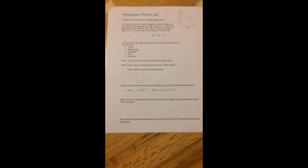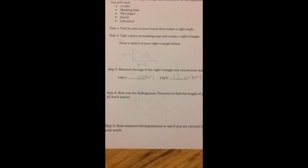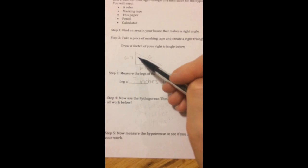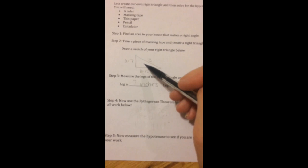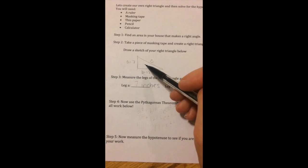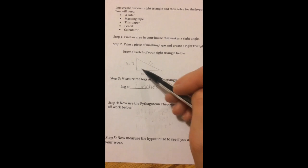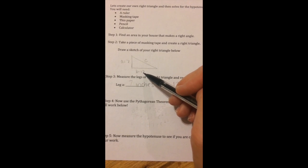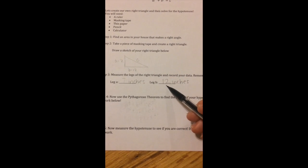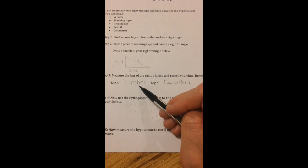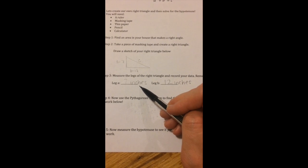After you measure your legs, record the data under step 3. I also created a little rough sketch of my right triangle, and I labeled 7 as my A and 12 as my B, because those were the inches when I measured the legs of my right triangle.